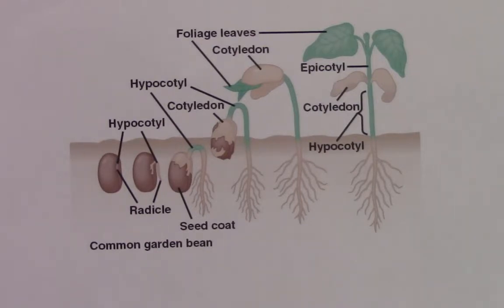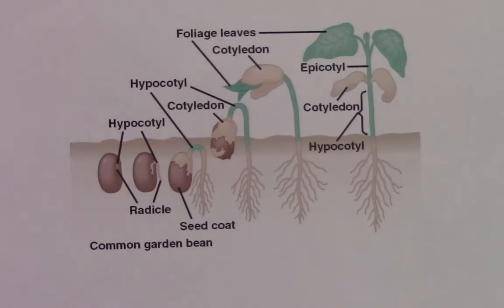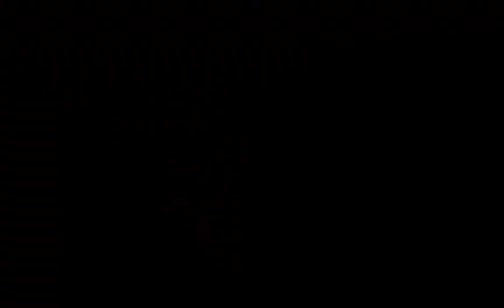How does water get into the seed? That would be osmosis — the movement of water across a membrane. The environmental conditions will influence how well osmosis into the seed proceeds. Think about osmosis and the membrane in each cell within that little seed as you set up your experiment and make your hypothesis.